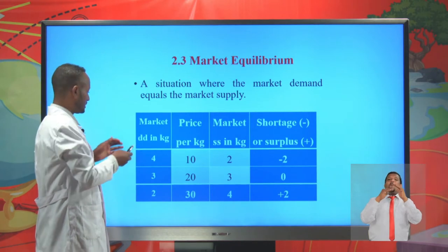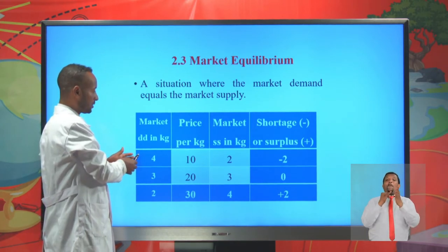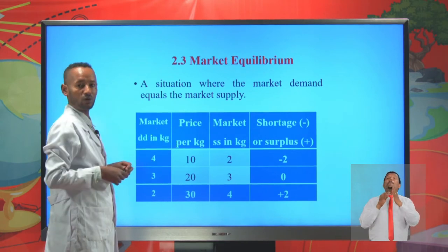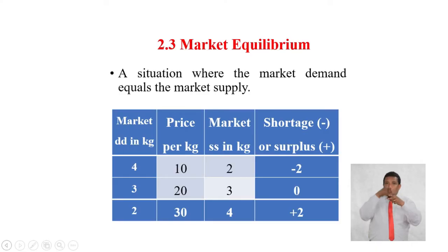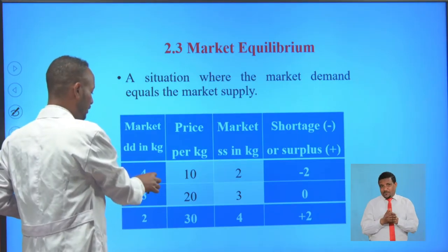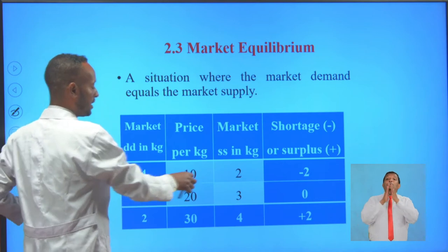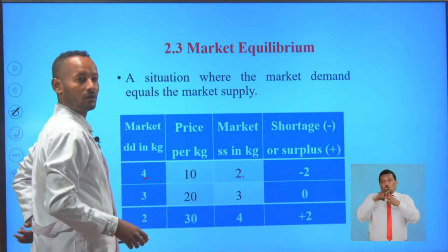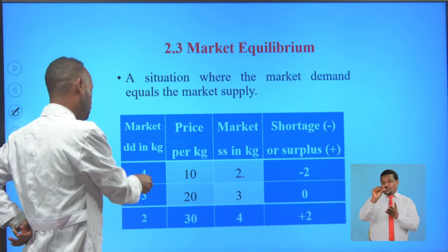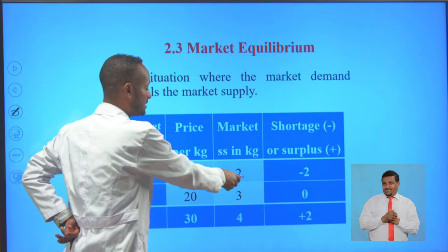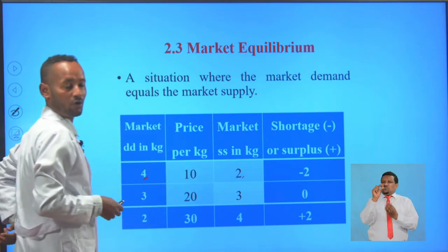This is the market demand in kilograms and this is the market supply in kilograms. When the price of a kilogram of orange is 10, the market demand for oranges is higher, but the market supply is only 2 kilograms because the price is too cheap. The buyers are willing and able to buy more oranges, but the suppliers are discouraged and will offer less.